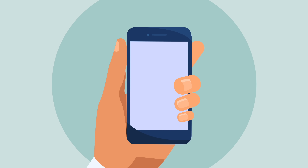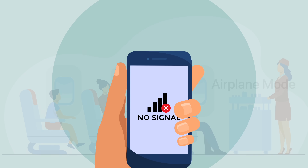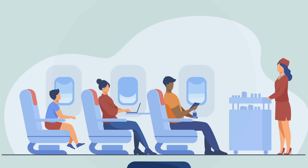But as phones became smarter, manufacturers were able to create modems that turned off transmission signals, allowing the devices to be used on flights without a cellular connection. This new capability was called airplane mode, and it remains an important feature of modern devices.